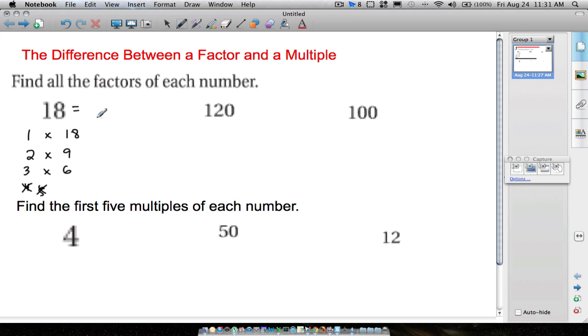So our factors of 18, let's list them in order. The factors would be one, two, three, six, nine, 18. Those are all the numbers that 18 is divisible by. 18 is divisible by one, by two, by three, six, nine, and itself.